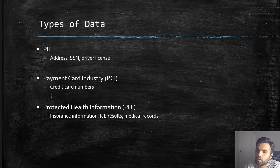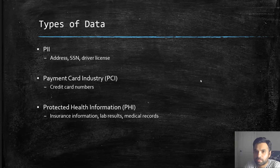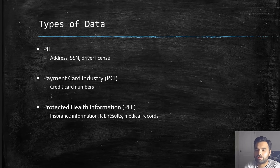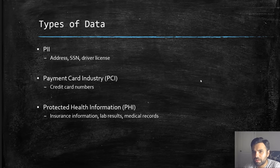Frameworks such as ISO 27001, SOC 2, HIPAA, and PCI. Depending on these frameworks, your organization may have to choose one based on applicability. For example, if your organization has a SaaS product functioning in the US, they would likely go with SOC 2. If they are storing data in the European region, they have to be in compliance with GDPR.